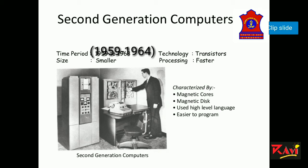The second generation computer used assembly language instead of machine language. The features of second generation computers are: the size was smaller than the first generation computer, the operating speed was quite faster, and the cost was reduced. But it still had some drawbacks — they produced a lot of heat, the speed was not too fast, and the memory was less.